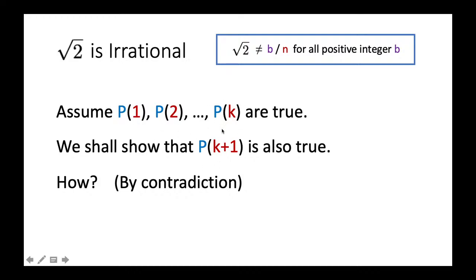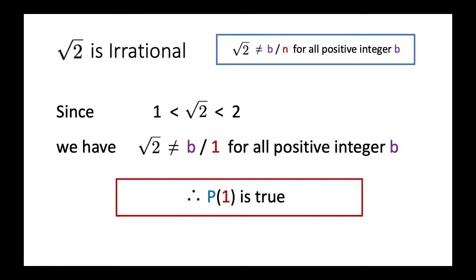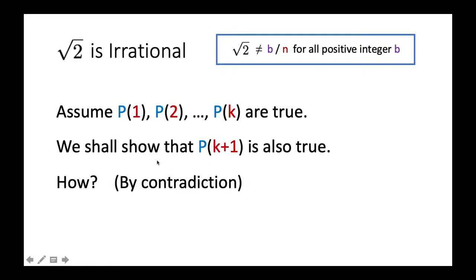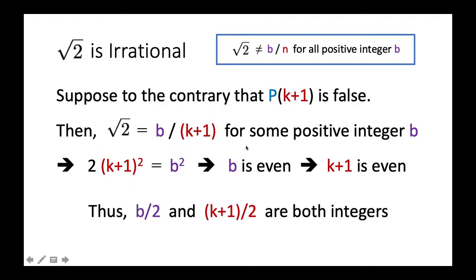Our target is to show P(k+1) is also true. With the base case shown and the inductive step established, the induction proof will be complete, showing P(n) is true for all n. We will prove P(k+1) by contradiction: assume to the contrary that P(k+1) is false and hope to arrive at a contradiction.